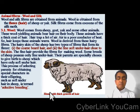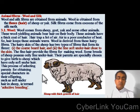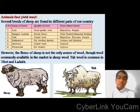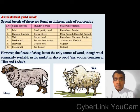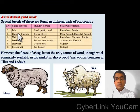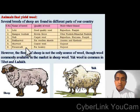Here you can see the diagram of a sheep with thick growth of hair. Several breeds of sheep are found in different parts of our country. For example: Lohi, Rampur Bushya, Nali, Bakkarwal, Marwari, Pathanbadi, etc.